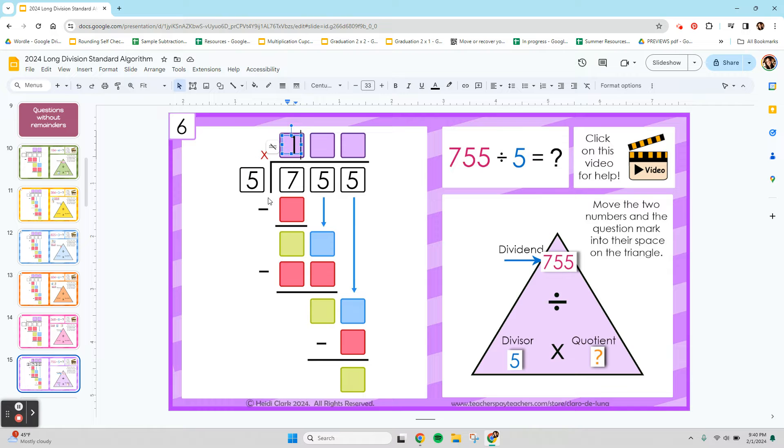So you can fit 5 into 7 one time. Next, you're going to multiply it back down. 1 times 5 is 5. And that's where I say we have some left over. You're going to subtract 7 minus 5 is 2. Next step is to bring down. So we're going to bring down our next digit. So we did 5 into 700, had a little bit left over. Now we're going to do 5 into this 50 here. So you just bring it down.